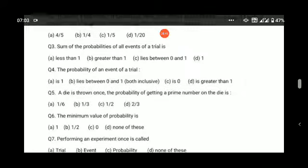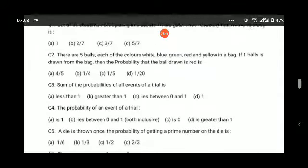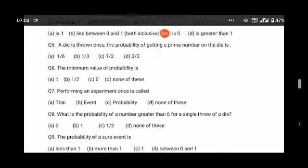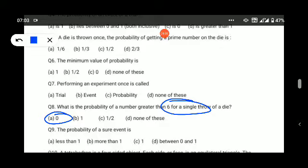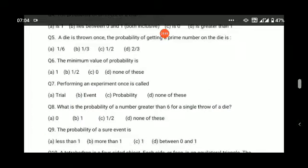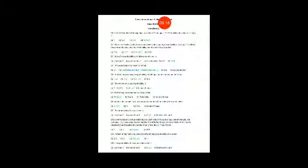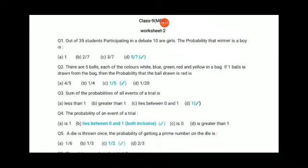We discussed probability of a sure event, which is one, and probability when a number must be greater than 6 on a die, which is impossible and equals zero. So probability of an impossible event is zero. Now I will show you the complete solution for the whole worksheet. You can take a screenshot from here to match your answers, or I can zoom in and show each question separately.